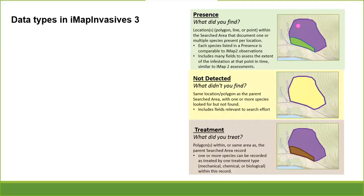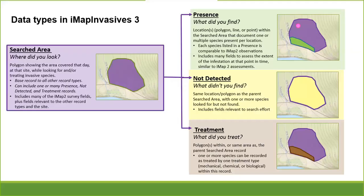Each of these different record types is connected to a base area — a new record type that we call the searched area. The searched area is the all-encompassing record that will house presence, not-detected, and treatment records occurring at that same location at the same point in time. This becomes very handy when you're going out and doing a lot of work at a certain site. When you're entering presence records with the mobile app, that searched area record is being created in the back end automatically. It's when you get into these more complex workflows that the searched area really comes in handy because it ties everything together.